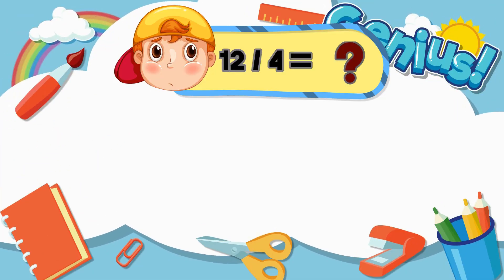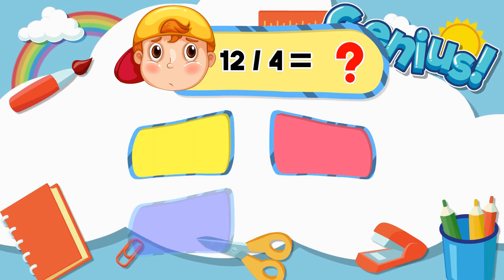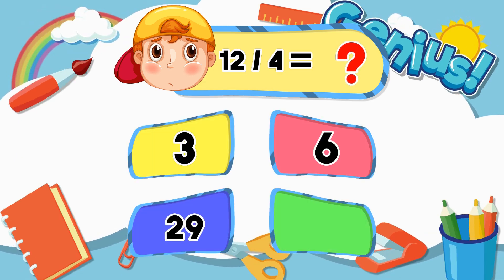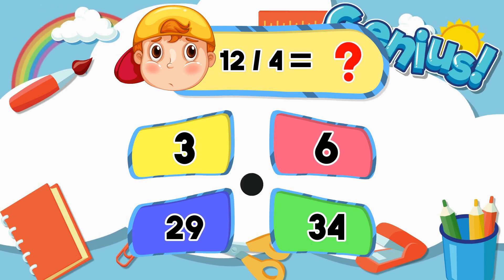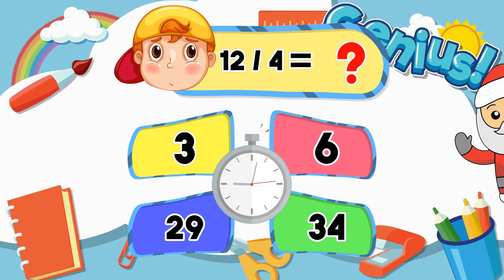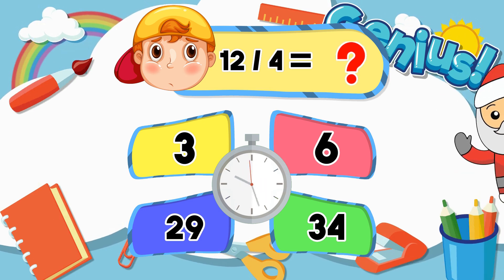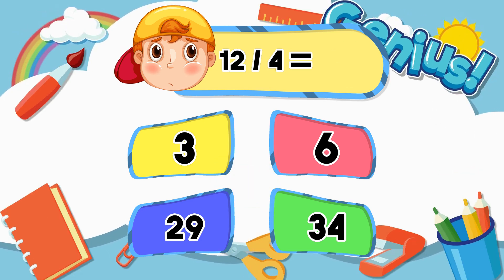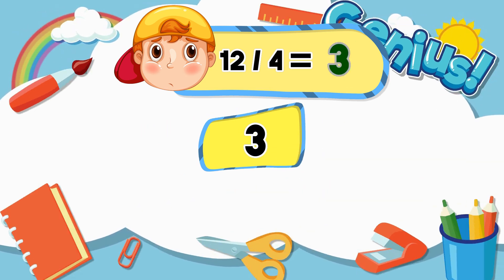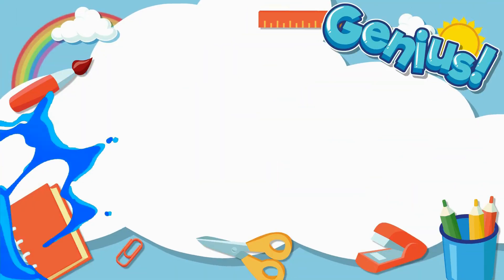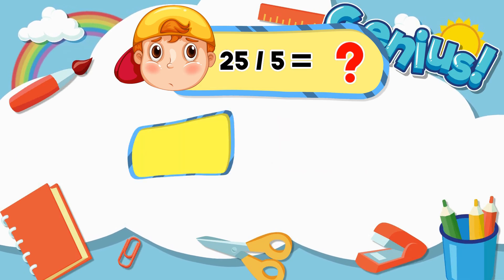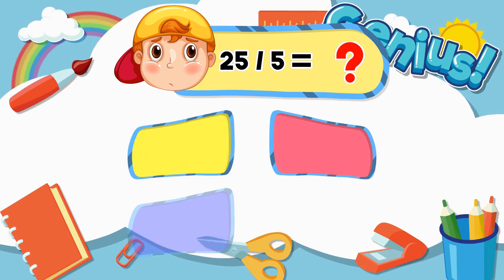What is twelve divided by four? Three, six, twenty-nine, thirty-four. Three.